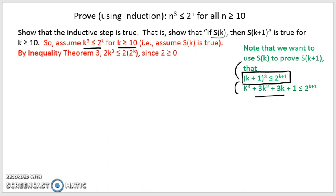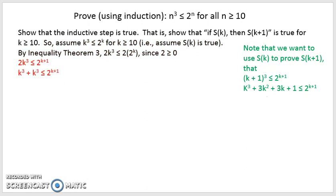The general strategy: we know K cubed is less than or equal to 2 to the K. I want to get 2 to the K plus 1 on the right-hand side, so I multiply both sides by 2. By inequality theorem 3, this is valid since 2 is greater than or equal to 0, giving us 2K cubed is less than or equal to 2 to the K plus 1. Now the right-hand side is correct. I'll break 2K cubed into K cubed plus K cubed.